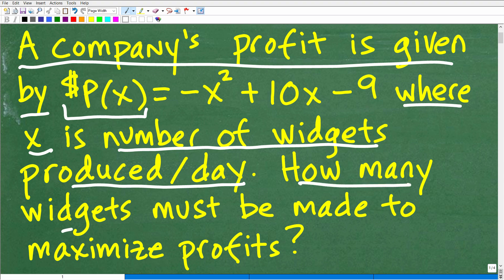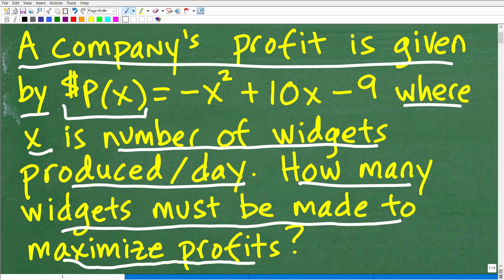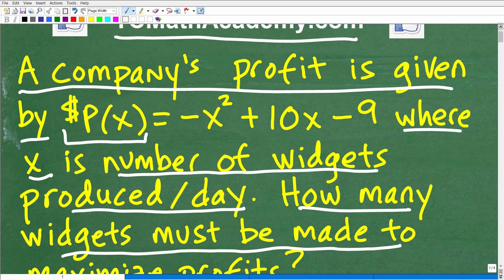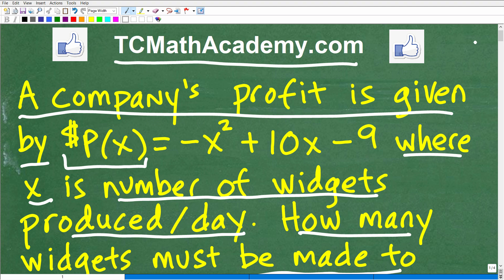How many widgets must be made to maximize the profit? We have some sort of profit model here. If we make too many widgets and we can't sell all of them, we'll lose money. If we don't make enough to fill all the sales we could possibly have, we'll lose money there too. So there is an optimal amount of widgets to produce to maximize profits.